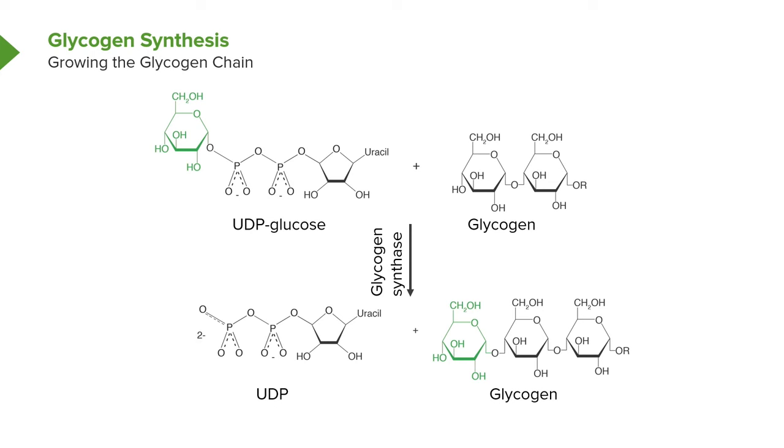Now, that's actually what we see in this image on the screen. UDP-glucose is getting ready to use its energy to transfer a part of itself to glycogen. And the part of itself it's transferring, of course, is glucose.